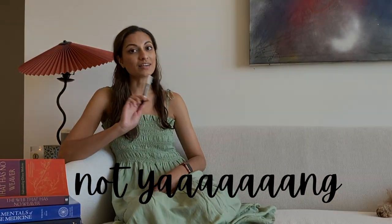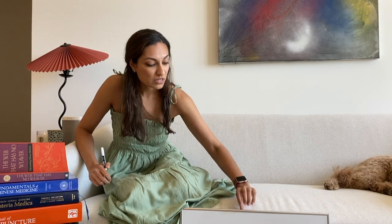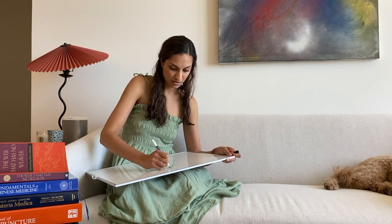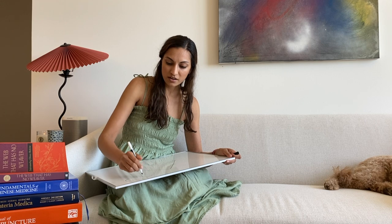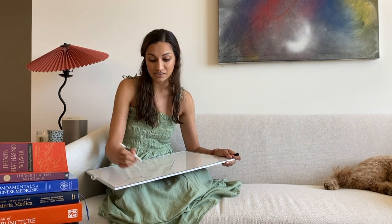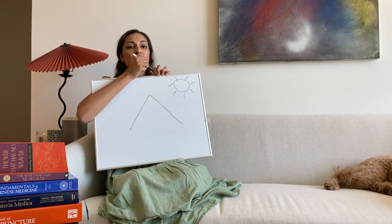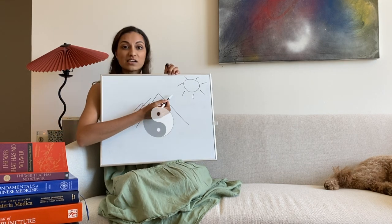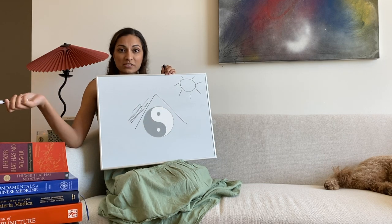The first component of Chinese medicine I wanted to talk about was yin and yang — and yes, it is pronounced 'young.' I have a little whiteboard to draw it out for you. Essentially, the traditional translation of yin and yang is: yin being the shady side of the hill and yang being the sunny side of the hill. They are opposites, but they complement one another.